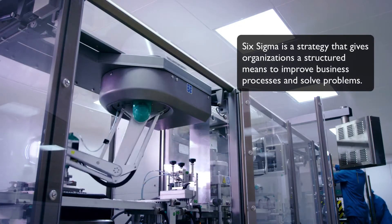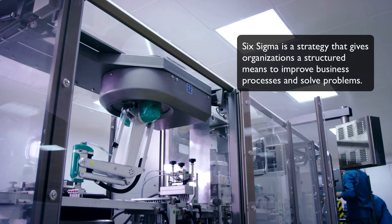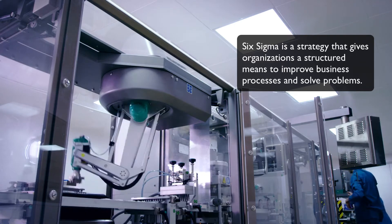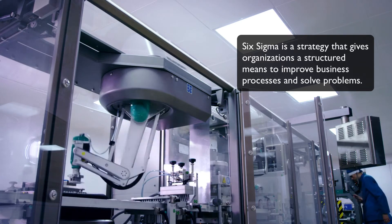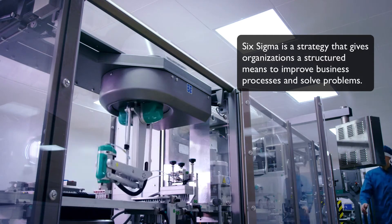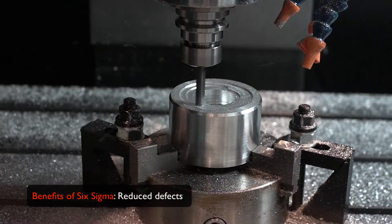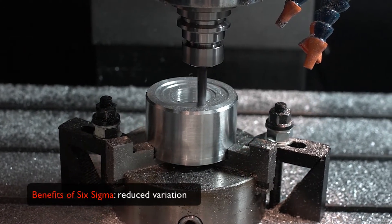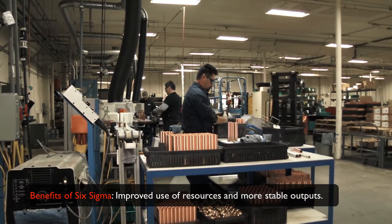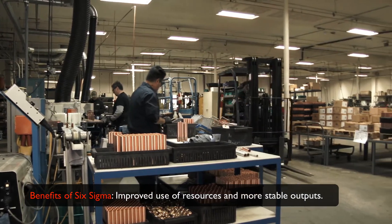Bill's new method of continuous improvement became known as Six Sigma. Six Sigma is a strategy that gives organizations a structured means to improve business processes and solve problems. This eventually leads to increased performance, reduced defects, reduced variation, improved use of resources, and more stable and consistent results or outputs.